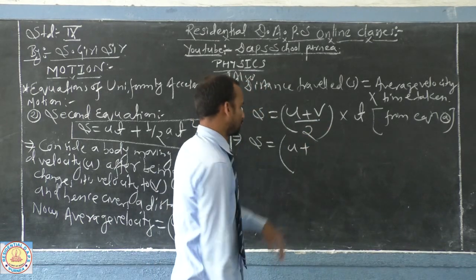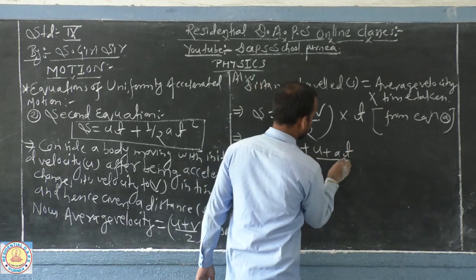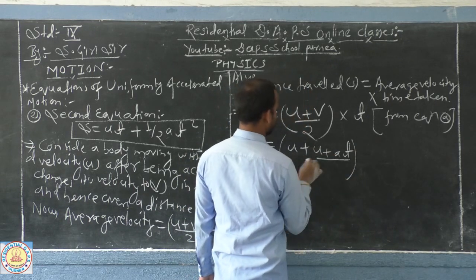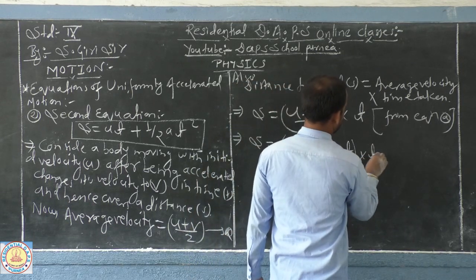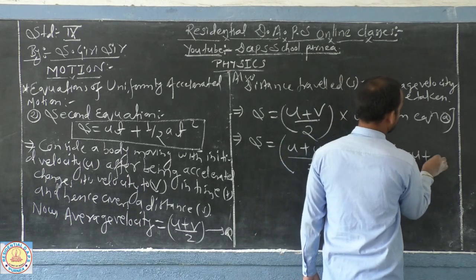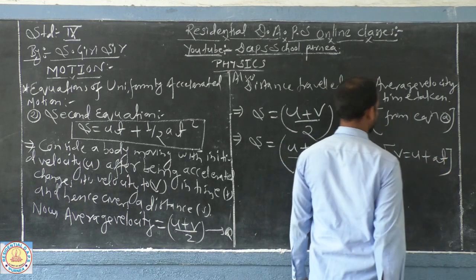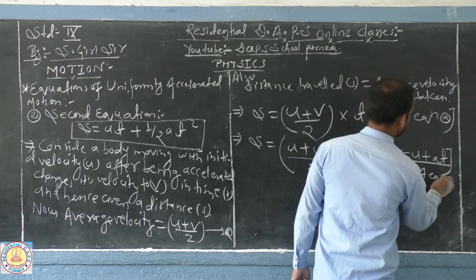write v equal to u plus a t. Why are you writing u plus a t? Because from equation 1, we have already derived v equal to u plus a t. It means the first equation of motion.